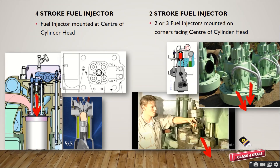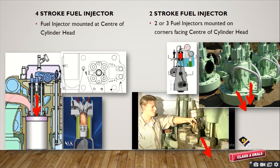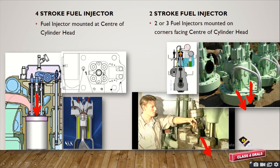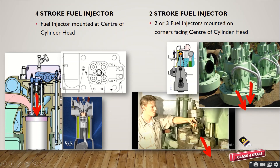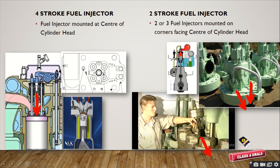Another important point regarding the mounting of the fuel injector on the cylinder head is that in the 4-stroke type, the fuel injector is present directly at the center of the cylinder head. You can see in the picture on the left side the fuel injector is placed directly above, facing downward. You can also see the cross section from the top, and in this animation the fuel injector is mounted directly at the center facing downward on the piston and the cylinder head.